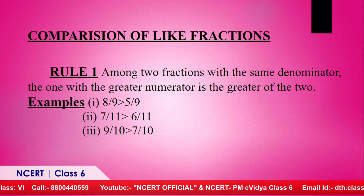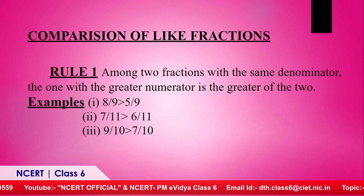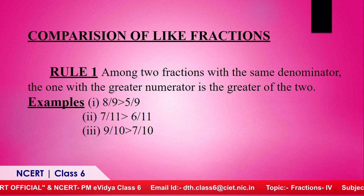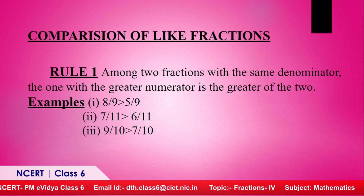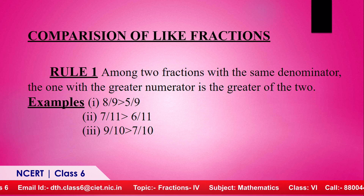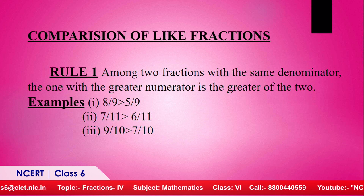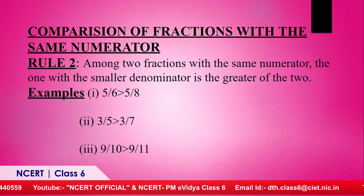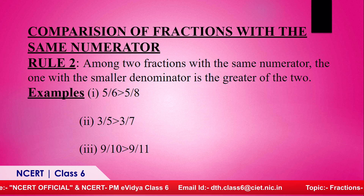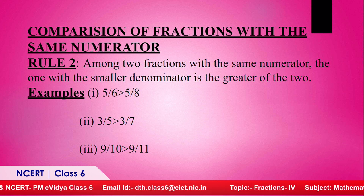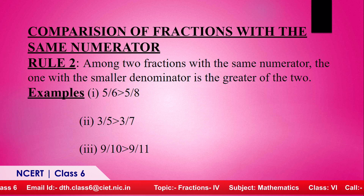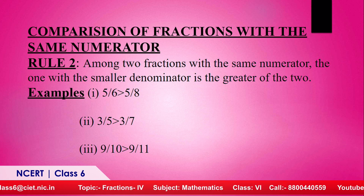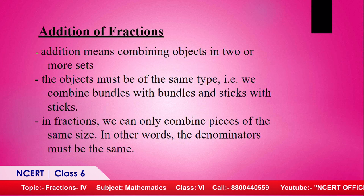For comparison of like fractions: Rule one — among two fractions with the same denominator, the one with the greater numerator is always greater. For example, eight upon nine is greater than five upon nine, and seven upon eleven is greater than six upon eleven. Rule two — among two fractions with the same numerator, the one with the smaller denominator is greater. For example, five upon six is greater than five upon eight, and three upon five is greater than three upon seven.